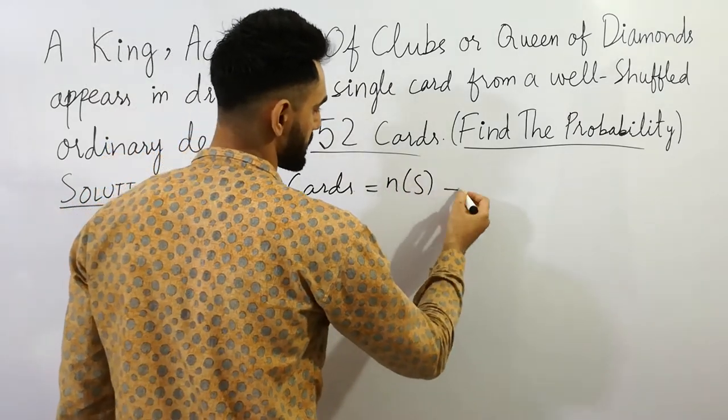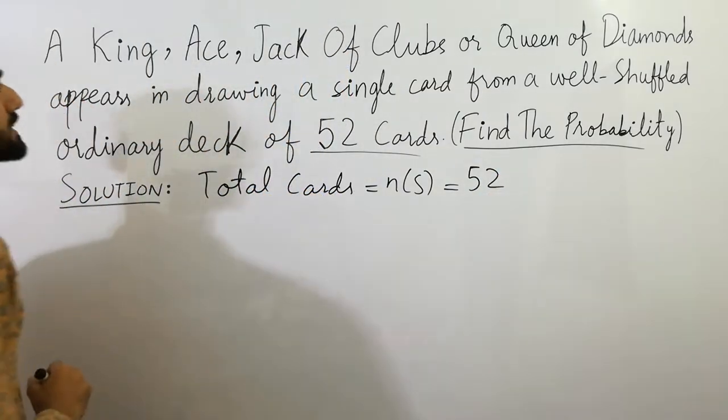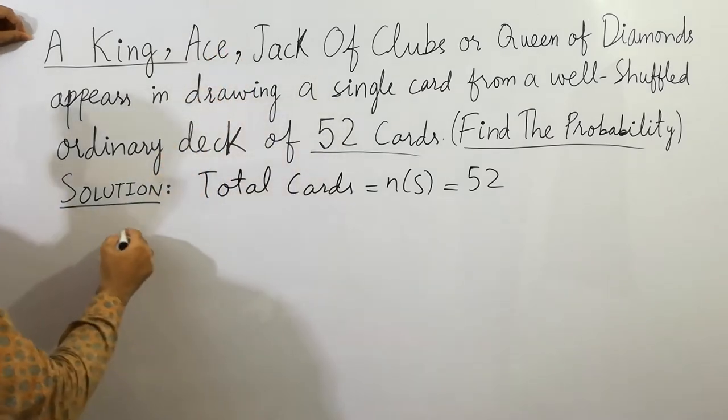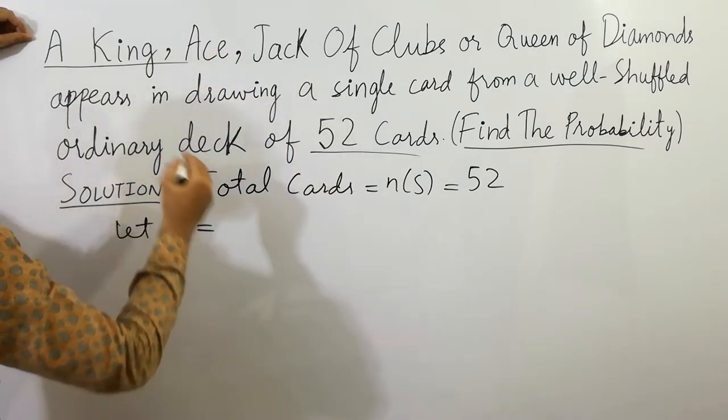So here total cards, you can say that number in sample space, total sample space is given here 52 cards. Next step is here: let's suppose that A is equal to king, ace.